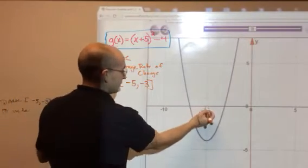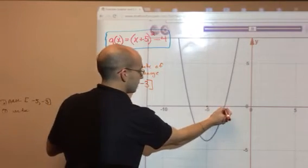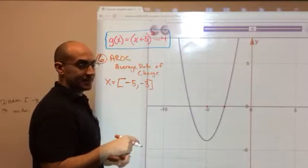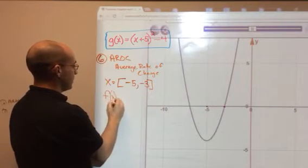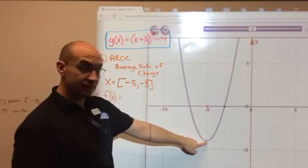So you're going to locate negative 5 on the graph and you're going to locate negative 3 on the graph. Now, I want to know where f of x is at those two x points. So the f of x values at negative 5, f of x is negative 4.